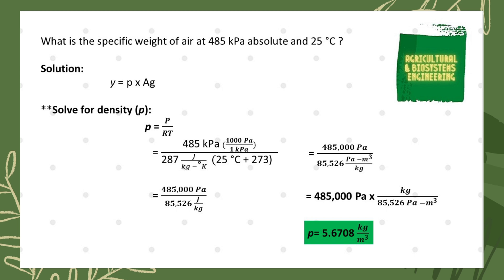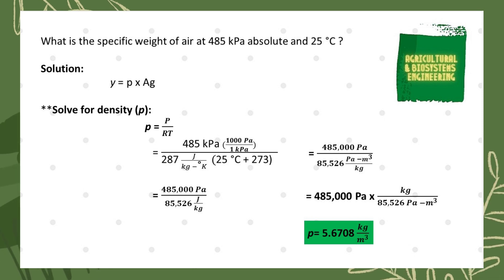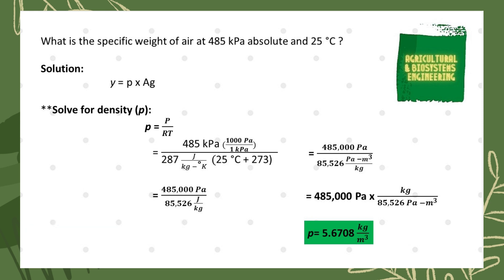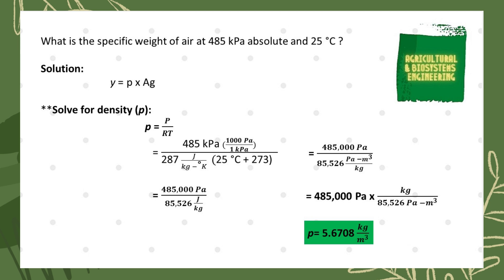Since the unit for density is kilogram per cubic meter, we know that joules is the same as pascal times cubic meter. With this, we can cancel out the pascal unit. We have 485,000 pascal divided by 85,526 pascal per cubic meter per kilogram, which is the same as 485,000 pascal multiplied by kilogram over 85,526 pascal per cubic meter.